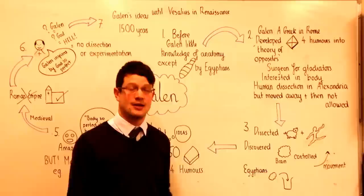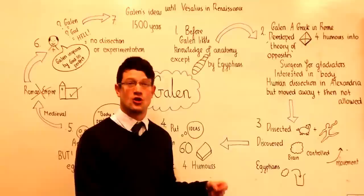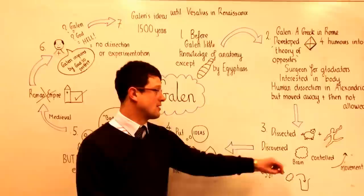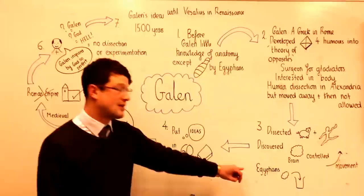He did this by tying a pig down onto a table, stabbing the pig and watching it squeal, and then cutting the nerve that joined the pig's brain to its vocal cords. When he then stabbed the pig, the pig made no noise, thereby proving that the brain was one of the most important organs of the human body.